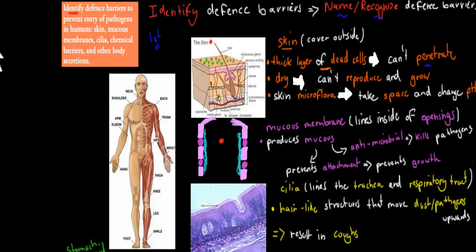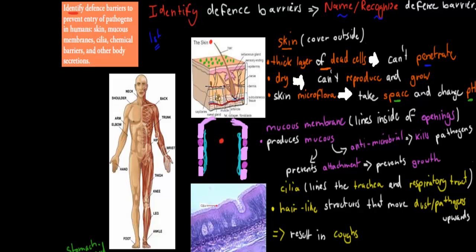The skin also has good skin microflora — good bacteria represented by green dots in the diagram. What these good bacteria do is take up space and change the pH. They take space away from pathogens, which can't find any space to grow. They also change the pH, making the environment unsuitable for other pathogens to grow. This is how the skin actually helps us to prevent pathogen growth.